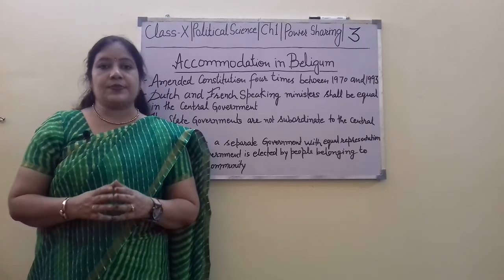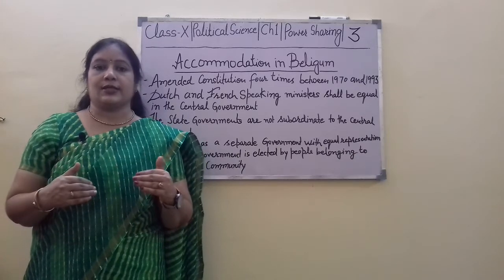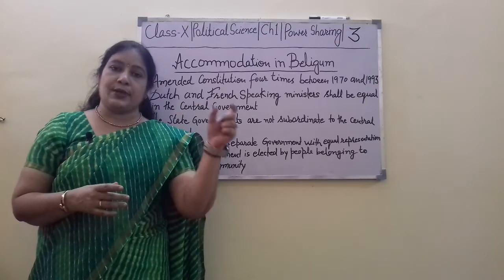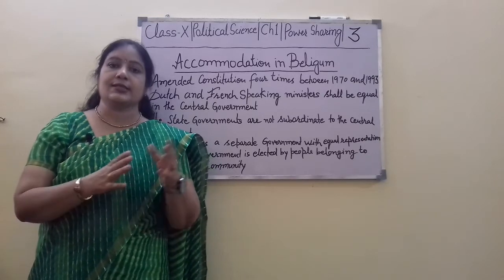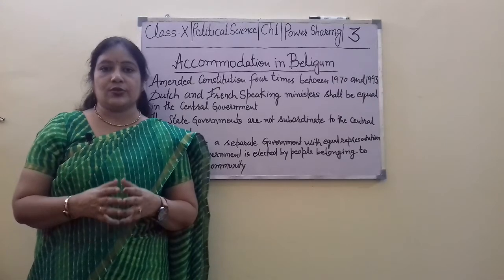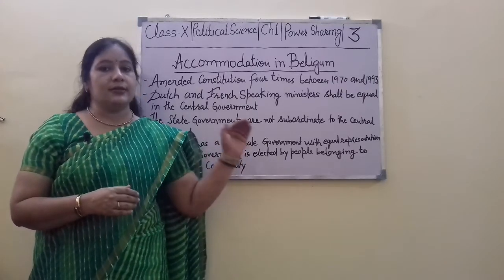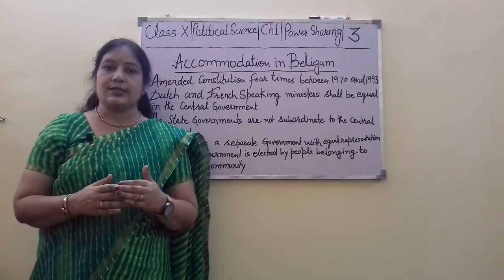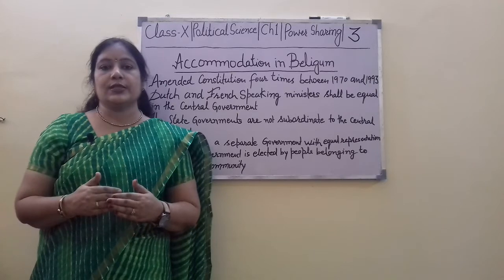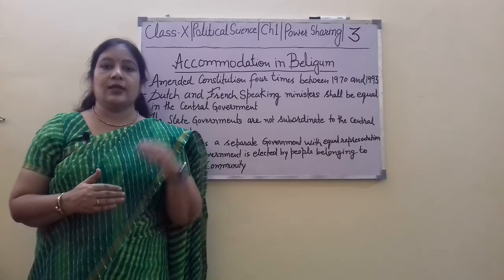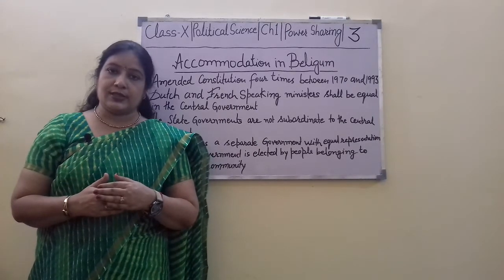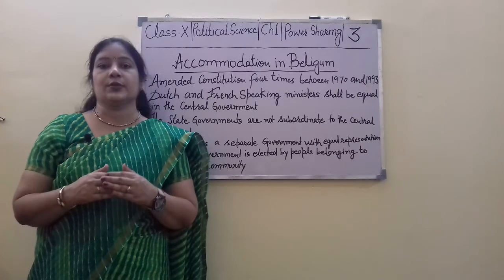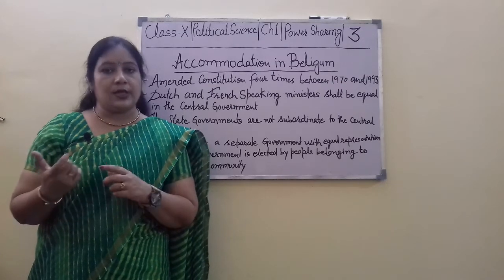The other step was the state government. They adopted the federal division, which was not in Sri Lanka. The Tamils demanded a separate region with a state government, but the federal division was not adopted — it remained a unitary government. But the Belgian government promoted the federal division. So the state government was not subordinate to the central government; state government has its autonomous powers.